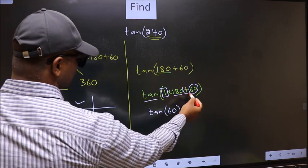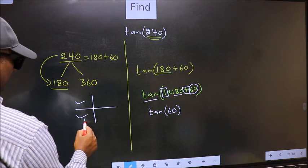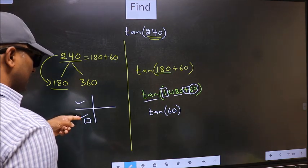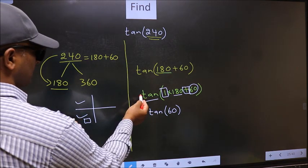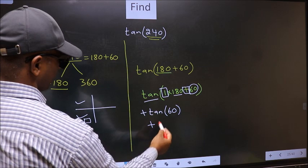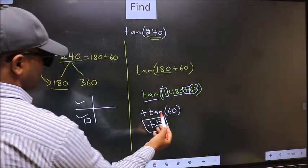Here we have plus. That means the angle lies in the third quadrant. And in the third quadrant, tan is positive. So we should put plus. So plus tan 60 is root 3. This is our answer.